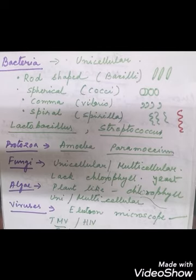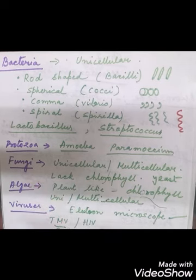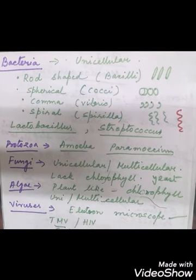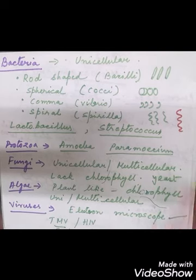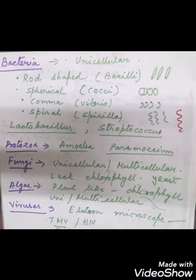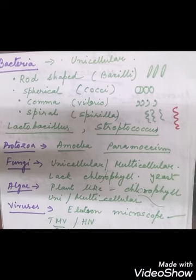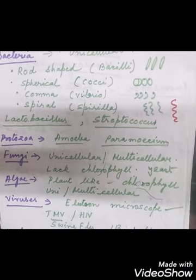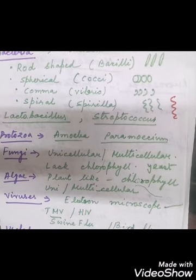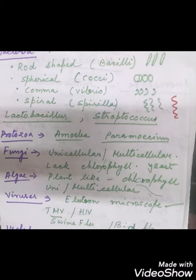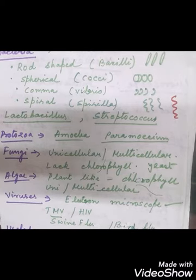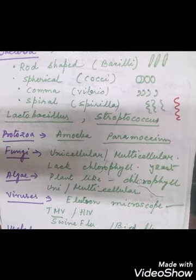Protozoa are another group — they are unicellular, animal-like organisms. Examples include Amoeba, Paramecium, and Euglena. Fungi are unicellular or multicellular; they don't have chlorophyll and take their nutrition from dead and decaying matter. Yeast is an example of unicellular fungi, while mushrooms and toadstools are multicellular.